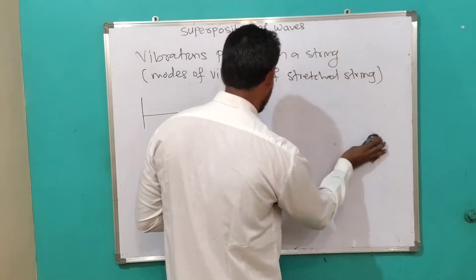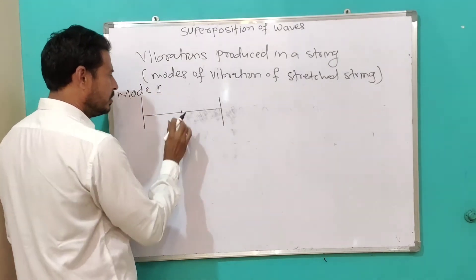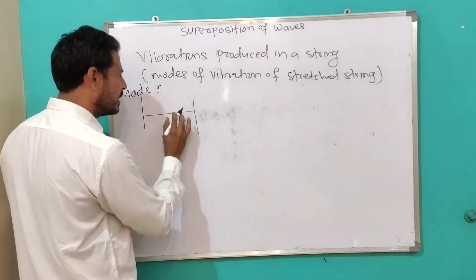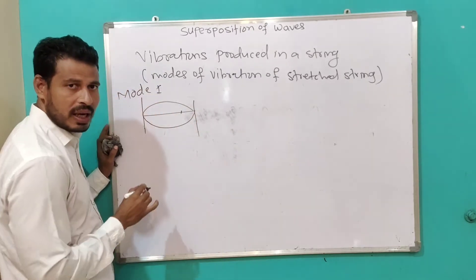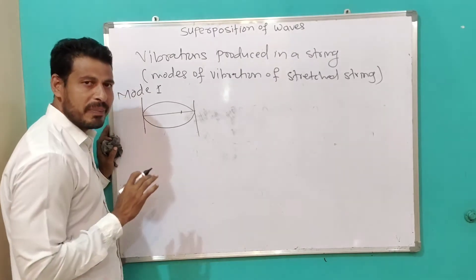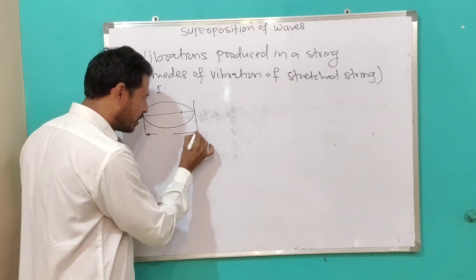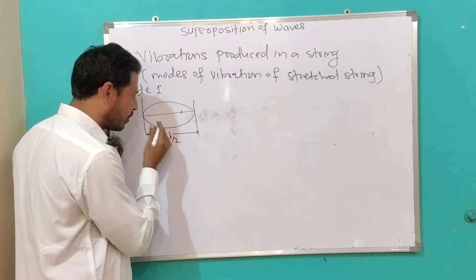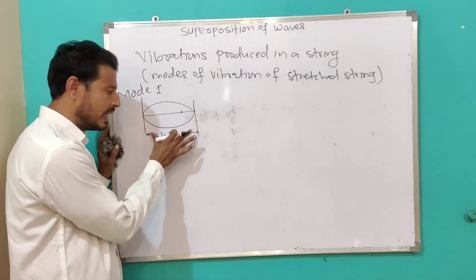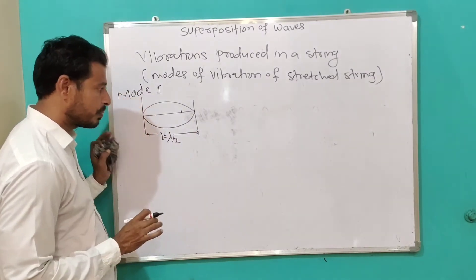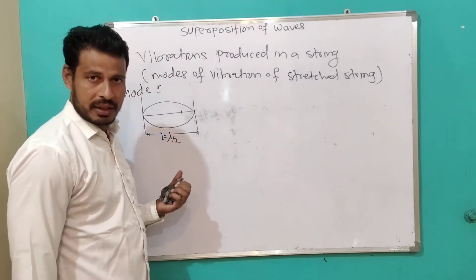Now consider the following cases. Mode 1: in this mode, the string vibrates in such a way that only one loop is formed. The length of the loop is lambda by 2. So the full length L equals lambda by 2, which means lambda equals 2L.